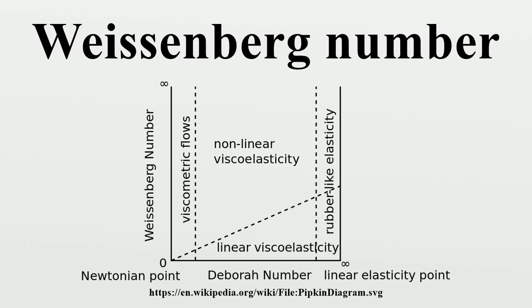For instance, in simple steady shear, the Weissenberg number, often abbreviated as Wi or We, is defined as the shear rate times the relaxation time. Since this number is obtained from scaling the evolution of the stress, it contains choices for the shear or elongation rate and the length scale. Therefore, the exact definition of all non-dimensional numbers should be given as well as the number itself.